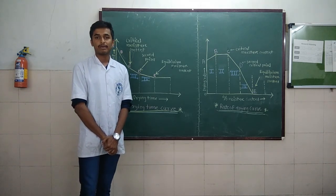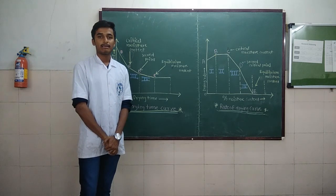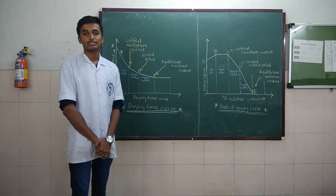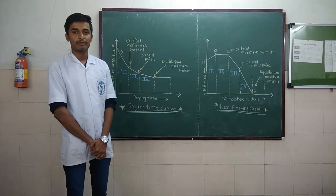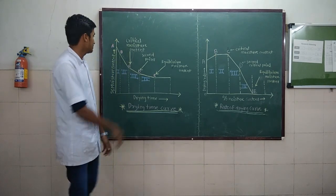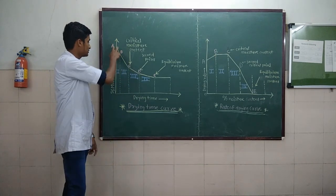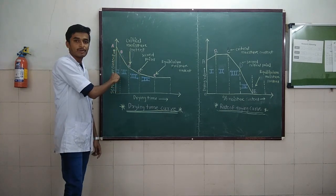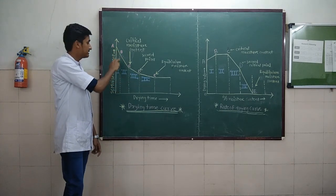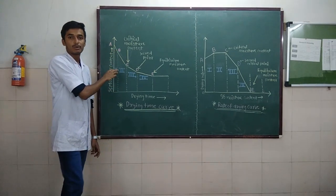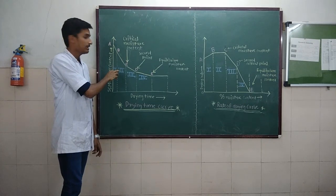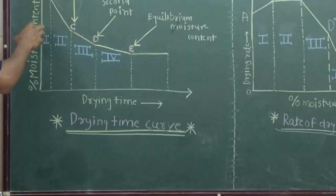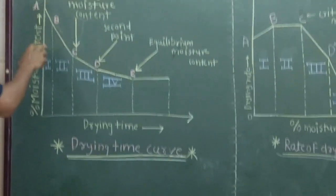There are five main stages in the mechanism of drying. The first stage is the initial adjustment period. In this particular period, heat is given to the wet solid — the solid is heated up and absorbs the drying energy.